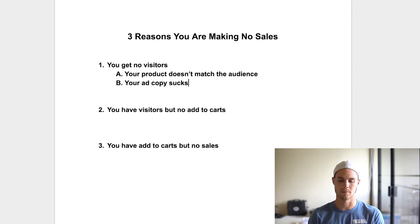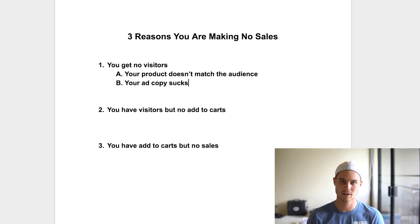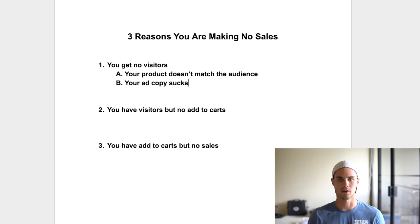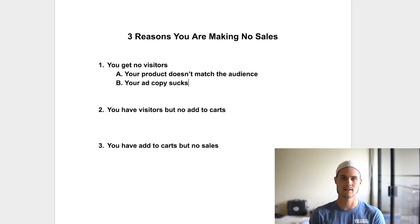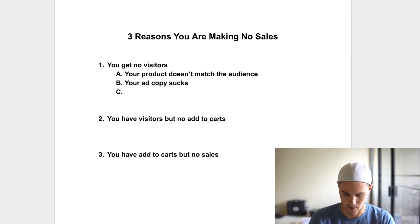In your ad copy, you want to have scarcity and urgency — some sort of reason for people to buy. Number two, you have to have some sort of great deal going on. Number three, you have to have FOMO — fear of missing out. If they don't buy now, they're missing out on a trend, something all their friends are doing. There's got to be some incentive for them to get off Instagram and actually go onto your website to purchase. So you've got to work on your ad copy.